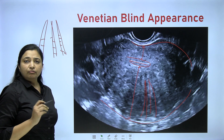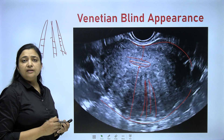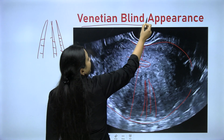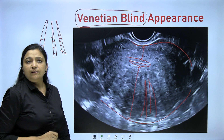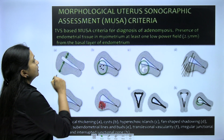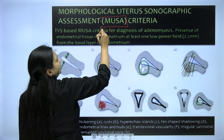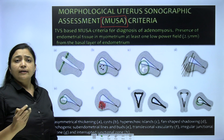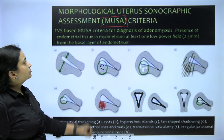Whenever you look at a sonography plate, any of these signs — posterior enhancement, myometrial cysts, or the venetian blind sign — allow you to label it as adenomyosis. There is something called the MUSA criteria — Morphological Uterus Sonographic Assessment criteria — which may or may not be asked in your examination, but it is useful for remembering the sonographic signs.